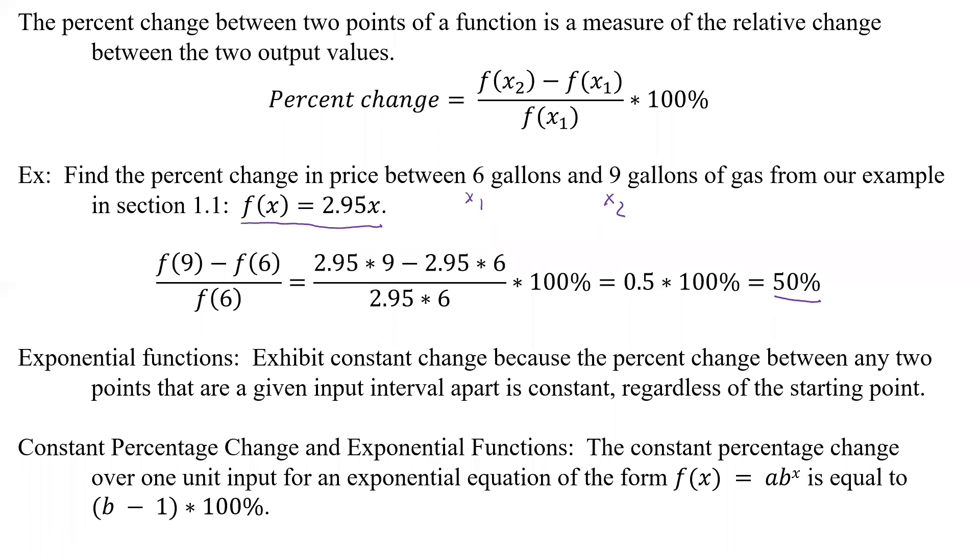Now exponential functions, they exhibit constant change because the percent change between any two points that are given input interval apart is constant regardless of the starting point. So on that curve, as long as you have equal distance points, the distance between here and here, you're going to have the same constant change as you would from here to here. Or if it's decreasing, it's going to be the same constant change no matter which way we look at that.